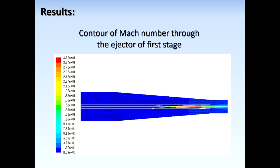There are several results including contours of pressure and Mach number, along with validation against analytical and experimental results. Here is the contour of Mach number through the first-stage ejector. At the nozzle throat, the Mach number reaches unity, then increases to the supersonic state at the exit. The velocity increases significantly, the pressure is reduced, and the required vacuum is obtained, which is necessary for suction of flow from the evaporator.